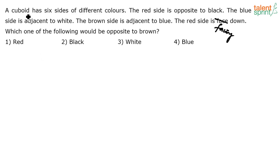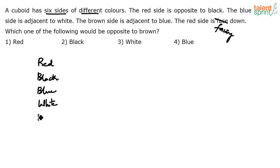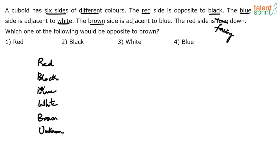It says there is a cuboid which has got six sides of different colors. The different colors that we find are red, black, blue, white, and brown. So the fifth color — that's it, only five colors mentioned. Red, black, blue, white, brown. So the sixth color has not been given at all. Let's say some unknown color there. These are the six sides: one, two, three, four, five, and six.